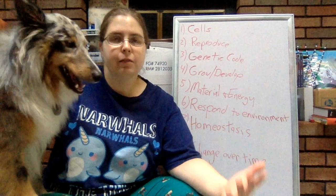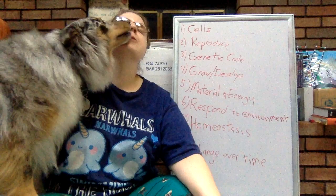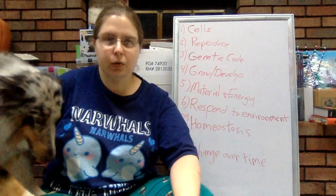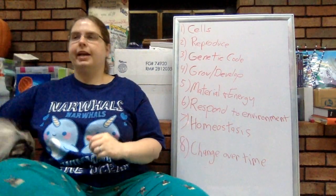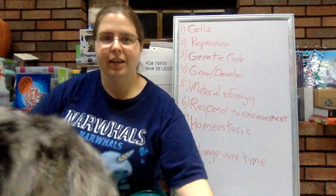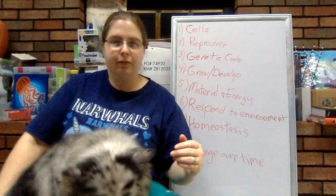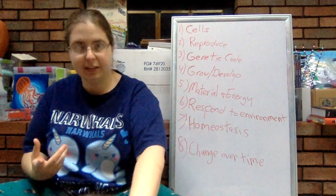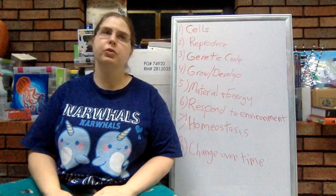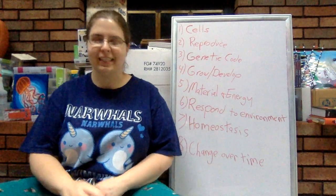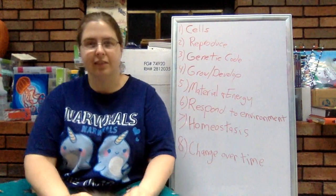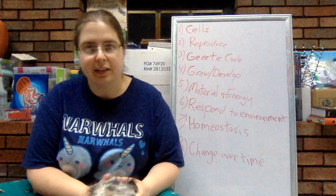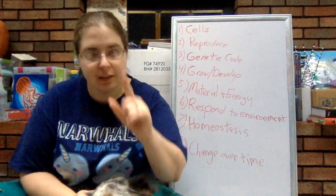Or they can be made out of one cell — they can be unicellular, like bacteria. Bacteria are small organisms that are made out of only one cell; they're only one cell big. Still, they have cells. We have a whole chapter on cells and we'll get into different parts of the cell there. For now, we'll leave it as: all living things have to be made out of at least one cell.